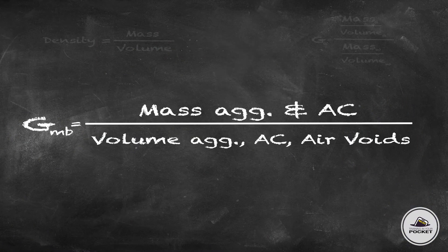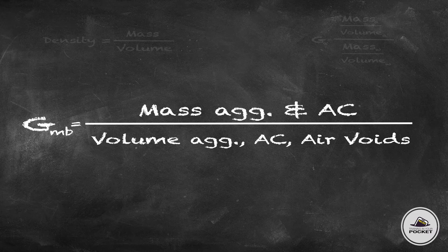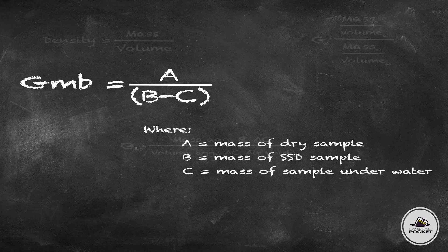But the bulk specific gravity, we're going to take the mass of the asphalt aggregate and binder and divide it by the aggregate, binder, and air. Okay, so in practice we're going to take that compacted sample, take the dry mass, and divide that by the saturated surface dry mass minus the mass underwater. Sure, helps to see the equations.